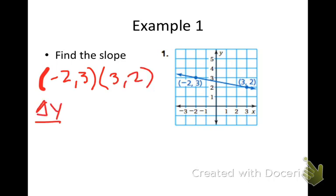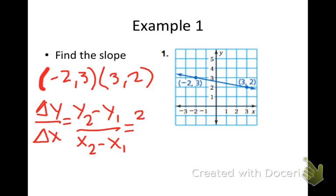So change in y over change in x is equal to y2 minus y1 over x2 minus x1. We could show our work, so 2 minus 3 over 3 minus the negative 2.